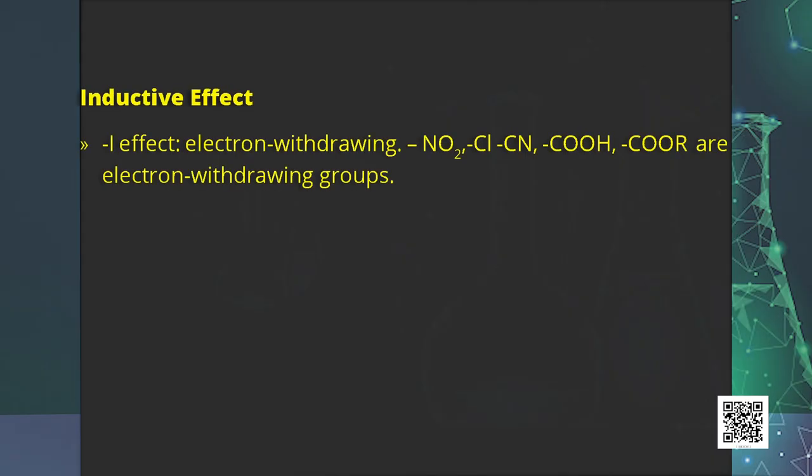The minus inductive effect (−I), or electron-withdrawing effect, is shown by groups such as nitro, halo, cyano, carboxyl, and ester groups. In summary, the inductive effect is a permanent polarization of a sigma bond caused by the polarization of an adjacent sigma bond. We will now watch a video to make this concept clearer.